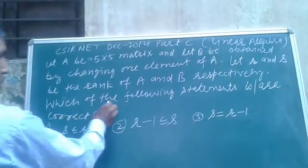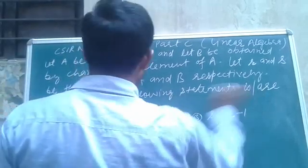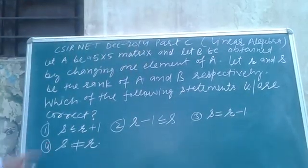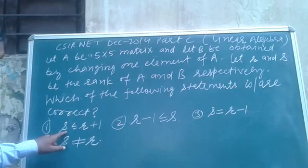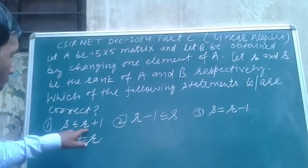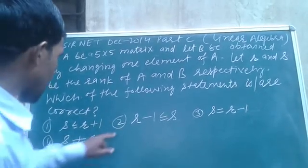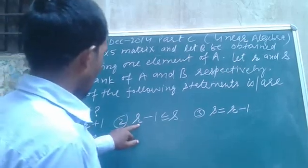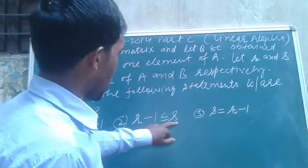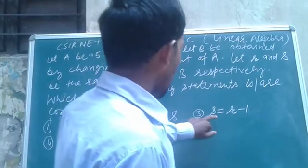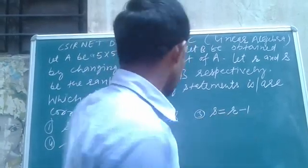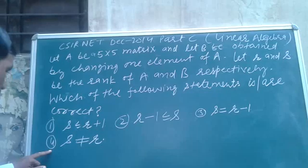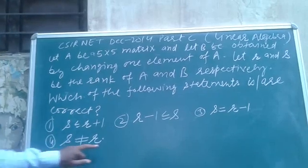Then, which of the following is or are correct? First statement, S ≤ R+1. Second option, R-1 ≤ S. Third, S = R-1. And fourth, S ≠ R.